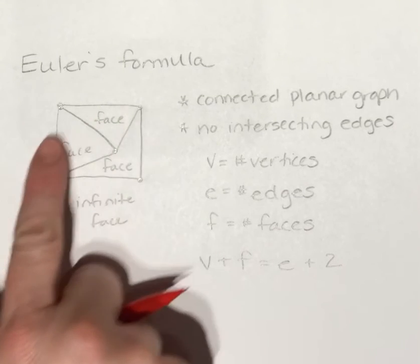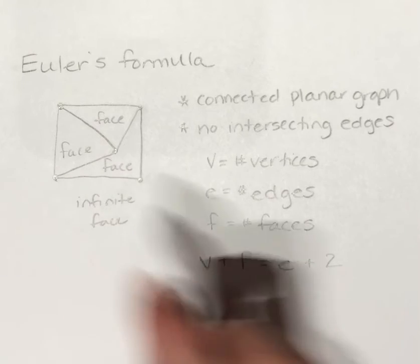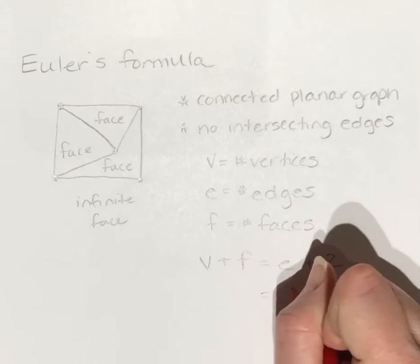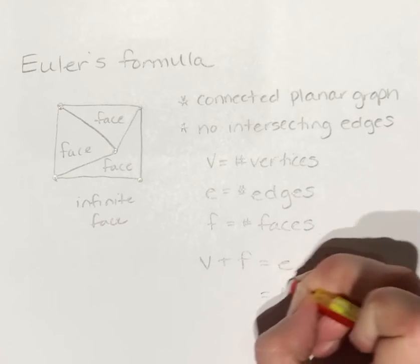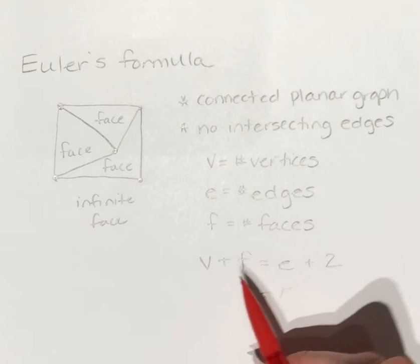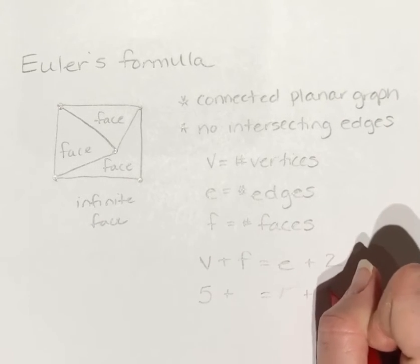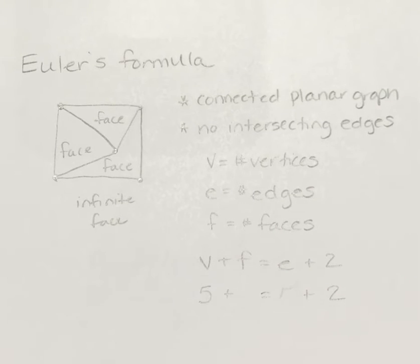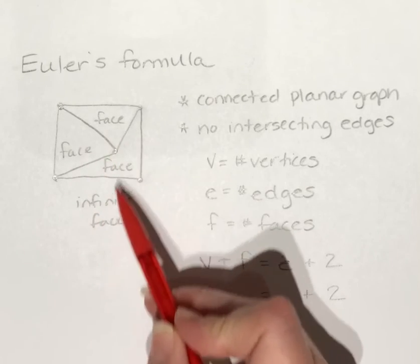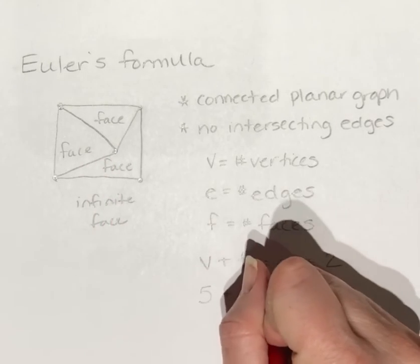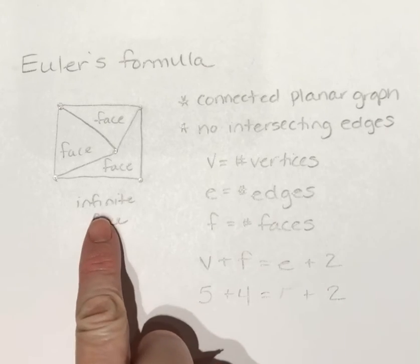So if we look at this picture here, I have 1, 2, 3, 4, 5—I almost put that under edges—so I have 5 vertices. I have 1, 2, 3, 4 faces. We count the face out here.